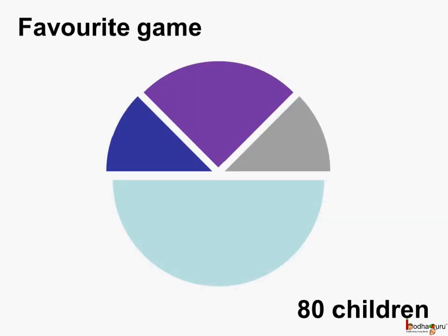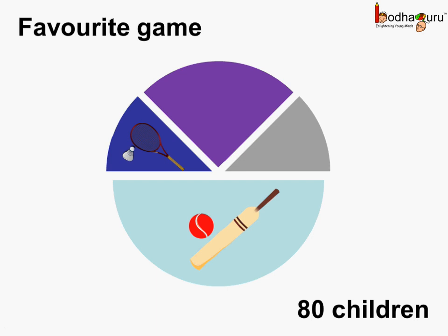He used a circle to represent the choice of 80 children with respect to their favorite games. The circle is divided into various parts and each part represents the number of children with their choice of favorite game. The light blue colored part represents cricket, the dark blue colored part represents badminton, the purple colored part represents table tennis, and the grey part represents chess.